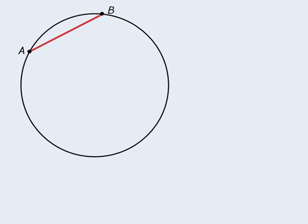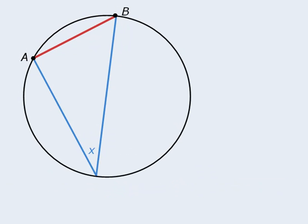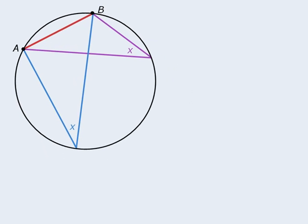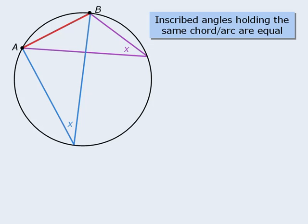We're ready for our first property. If we have an inscribed angle holding a chord, and we have another inscribed angle holding the same chord, then both inscribed angles will be equal. The property is that inscribed angles holding the same chord or arc are always equal. So if we add another inscribed angle holding the same chord, that angle will be the same as the other two angles. Please note that this rule applies only if the inscribed angles in question are all on the same side of the chord. An inscribed angle on the other side of chord AB will not be the same as the other inscribed angles.